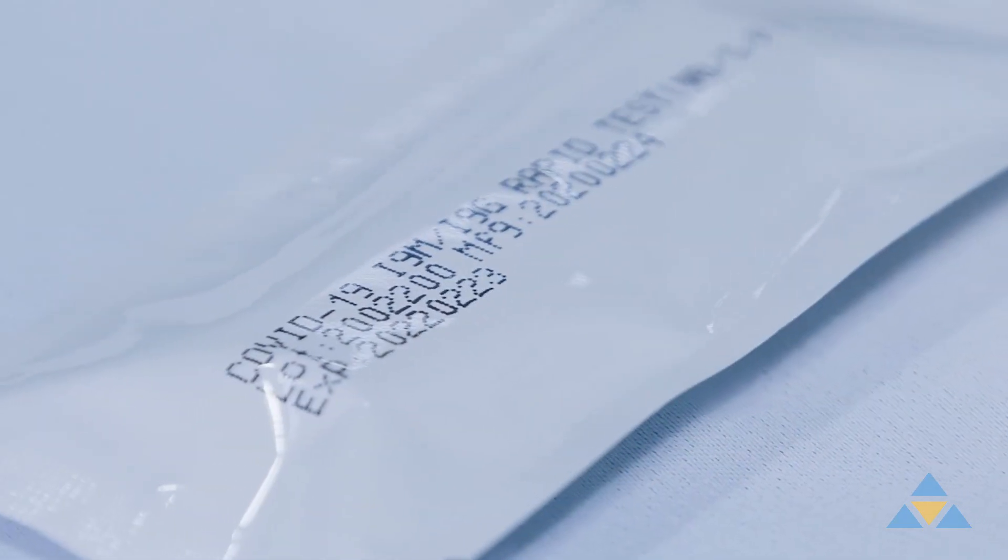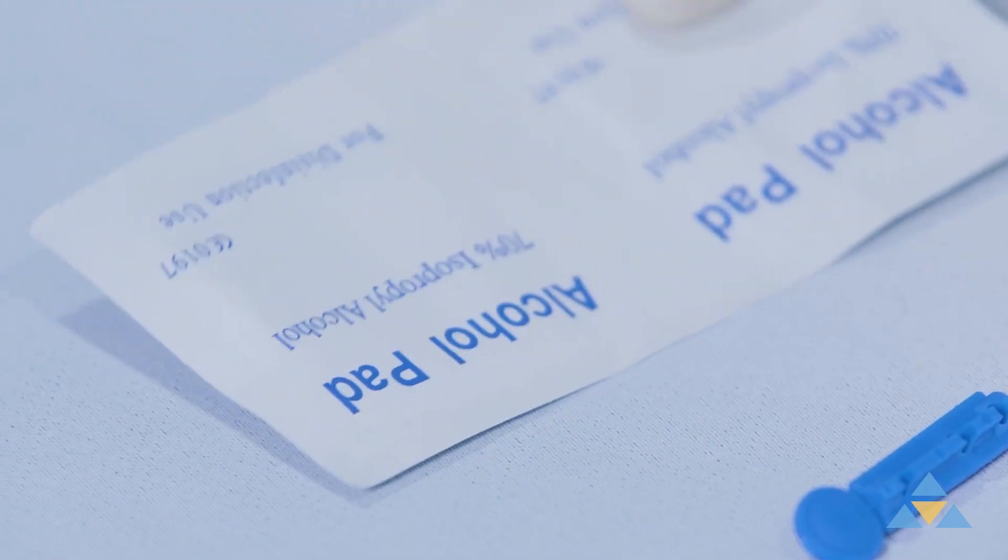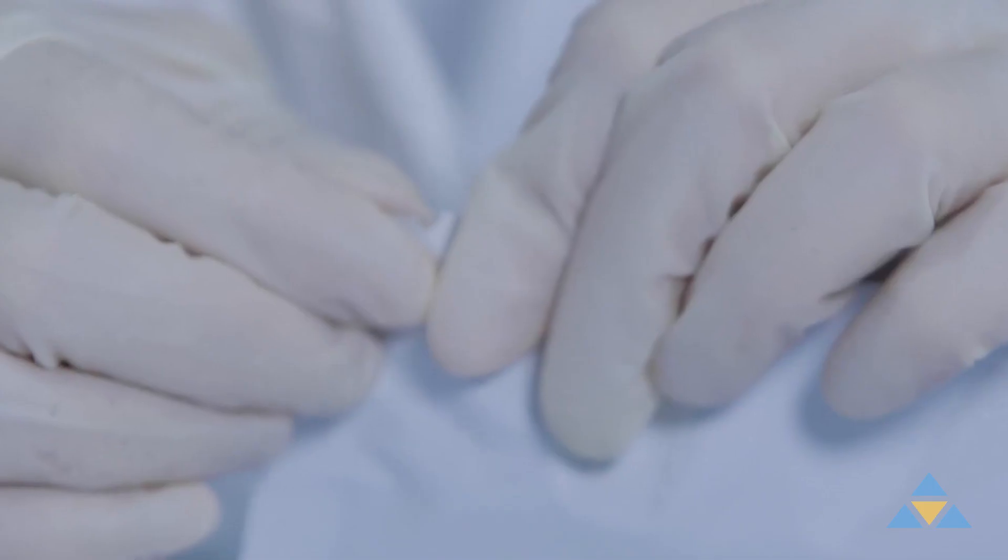Your kit consists of a testing cassette and a buffer and dropper. A lancet and alcohol pad are needed but are not included in your kit.